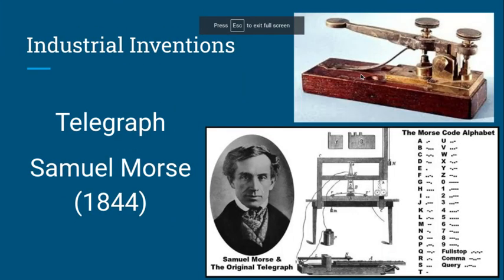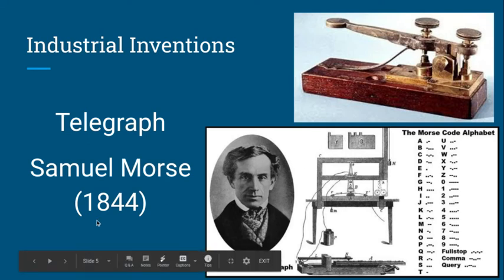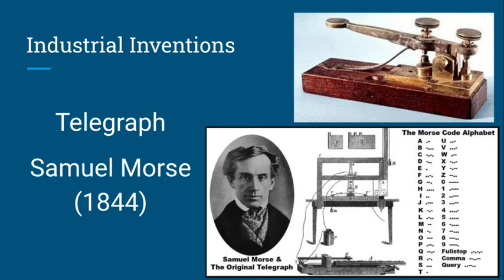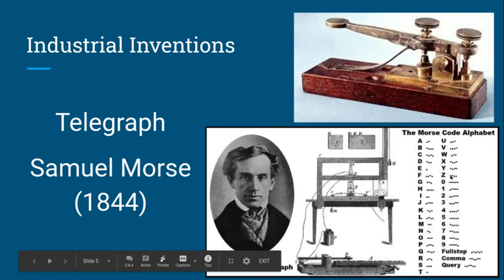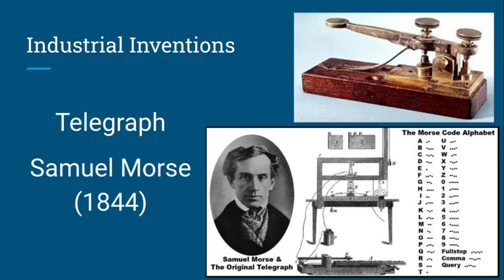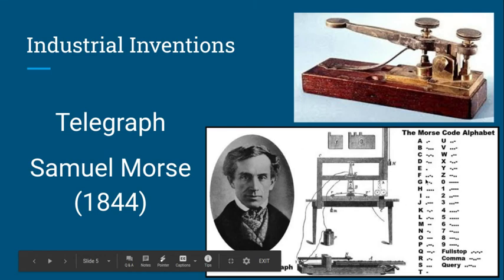Moving on with our notes. The next industrial invention involves a big advancement in communication — the telegraph, invented by Samuel Morse in 1844. The name Morse should be familiar if you know about Morse Code, which is a pattern of taps or ticks that translate into letters of the alphabet, which you can put into a sentence. For example, one quick tap and one long tap would signify the letter A; three short ticks and one long tick would be the letter V. They would use this machine to communicate and transport messages across different distances. It's pretty amazing how this has evolved into the iPhones and Androids we text on today.